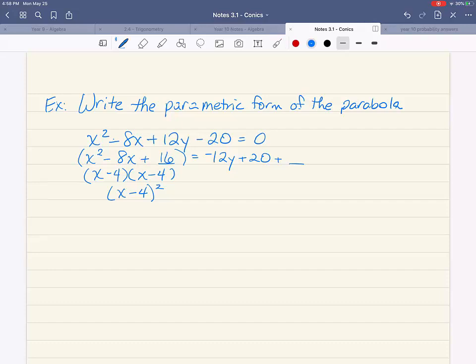What goes in the blank? It will be positive 16. Remember, it's going to be these two terms multiplied together. What goes on the other side? It is also a positive 16. There's no coefficient in the front to affect it like we saw a lot on the ellipses and hyperbolas.